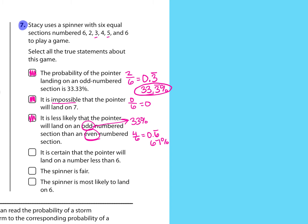The fourth choice says it's certain that it will land on a number less than 6, but 6 is a choice, so that's false. The next one says it's fair. Well, 6 occurs twice or two times, while the others only occur once, so it's not fair. And then the last choice, it is most likely to land on the number 6, since it occurs multiple times.